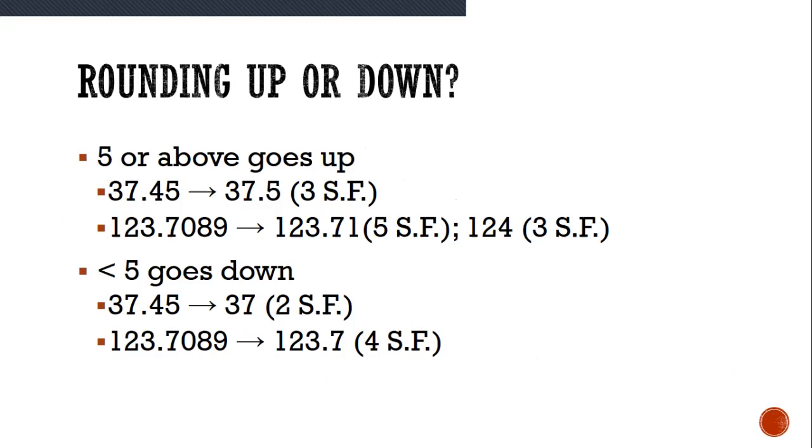We're going to practice these with the Atlantic Pacific rule, and we're going to talk about how we round. So, when I'm looking at this number, 37.45, I notice that the decimal is present. And so, I'm going to count the number of significant figures. One, two, three, four. Now, if I wanted there to only be three significant figures, because that's how precise my measurement tool is, I would take this back end and I would round it to 37.5.